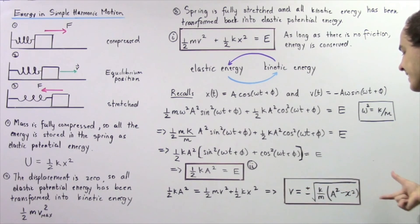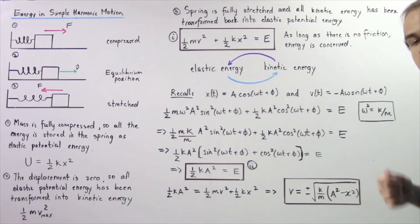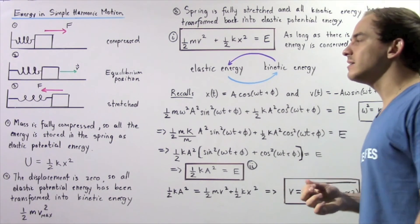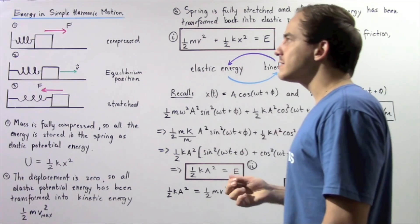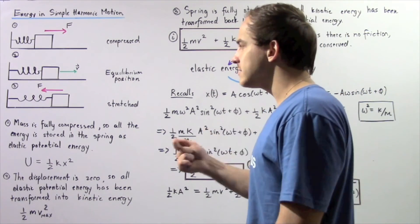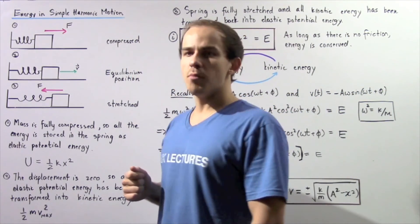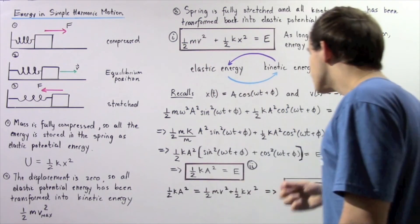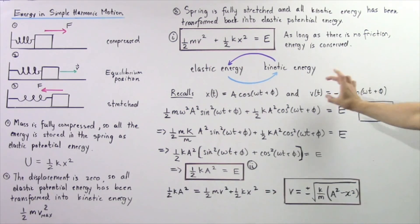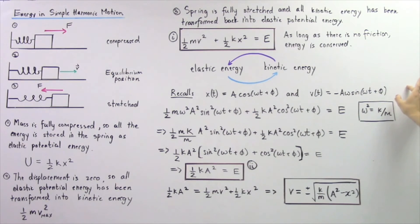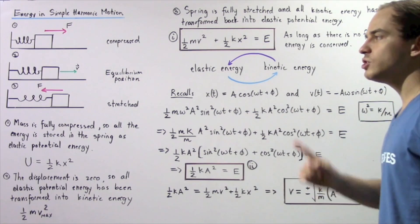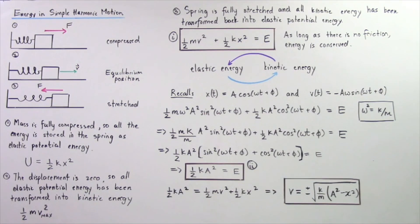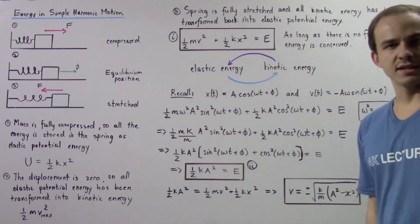This equation is useful because it allows us to calculate the velocity of an object oscillating in simple harmonic motion without knowing the time. If we know the time, we can use the sine/cosine velocity formula. But if we don't know the time, we can use this energy-based formula to solve for velocity.